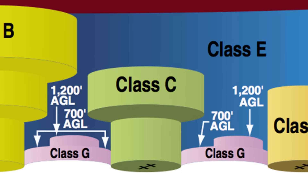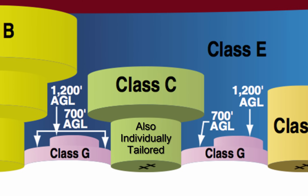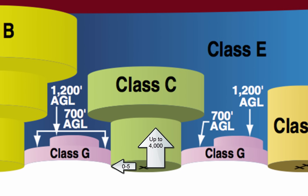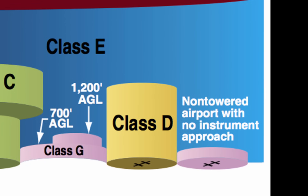Class C airspace is generally airspace from the surface to 4,000 feet above the airport elevation, around an airport with an operating control tower, serviced by a radar approach control, and having a certain number of IFR operations or passenger emplanements. These airspaces are also individually tailored, but generally are 5 nautical miles from the airport to 4,000 feet, and a ring from 5 to 10 nautical miles that exists from 1,200 feet to 4,000 feet above the airport elevation. Every aircraft in the airspace must maintain two-way radio communication with air traffic control.